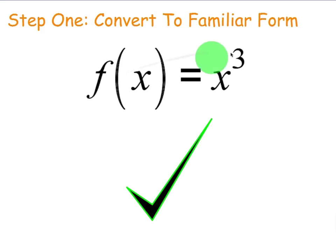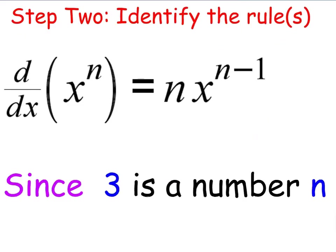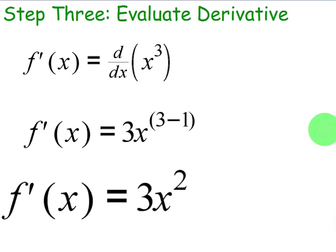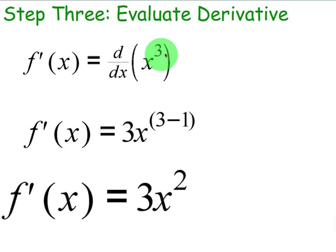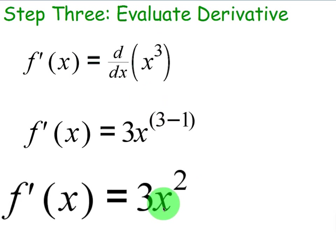First step: make sure it's in a form where you can take the derivative. Since 3 is a number and the base is a variable, we can use the power rule. We're going to take the derivative of x³ — d/dx of x³, which is the same as f′(x). Using the power rule: take the exponent, move it to the coefficient, and subtract 1 from the exponent. So it's going to be 3x². The original exponent becomes the coefficient; subtract 1 from the original to get the new exponent. Derivative of x³ is 3x².